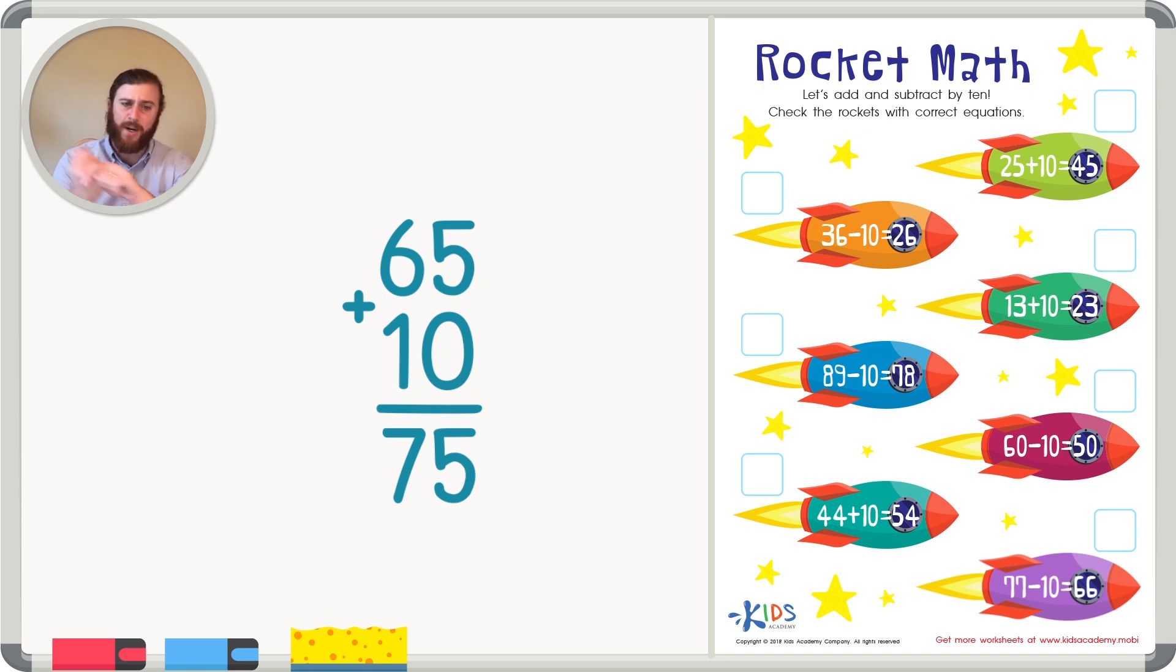What about if we wanted to take away 10? Well if we started with our same number 75 and took away 10, we have the same type of problem. We have a 0 in the ones place.